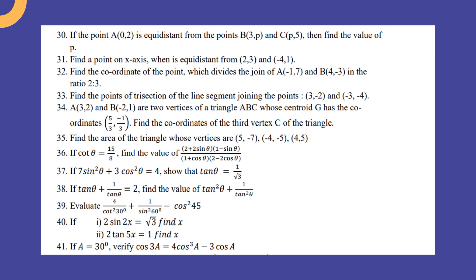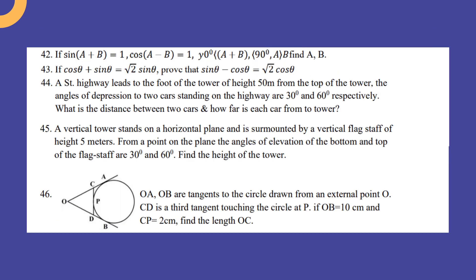If a = 30°, verify cos 3a = 4 cos³ a - 3 cos a. If sin(a + b) = 1 and cos(a - b) = 1, where a > b and a + b ≤ 90°, find a and b.